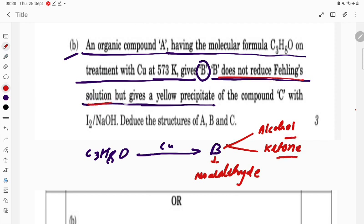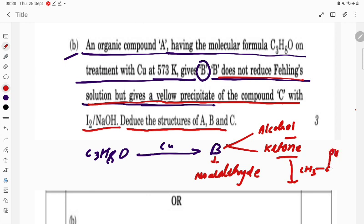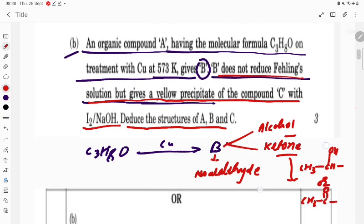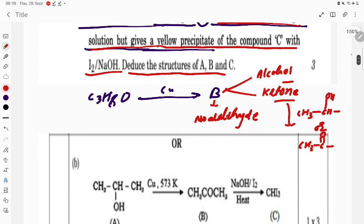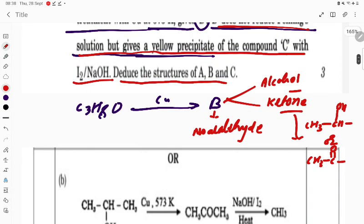It gives yellow precipitate with compound C with I2 and NaOH. If there is this group CH3CO, the methyl keto group, it will give the iodoform test. We have to see the formula to determine what compound fits.